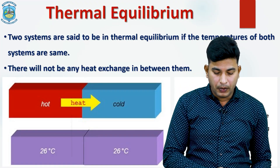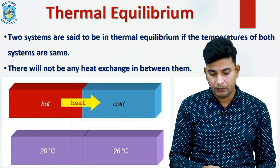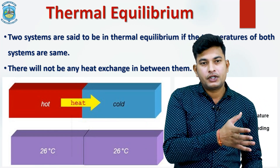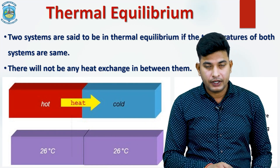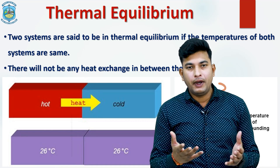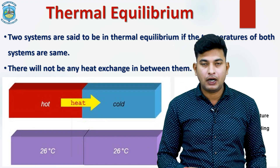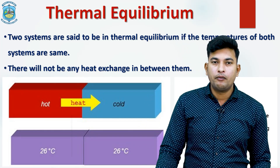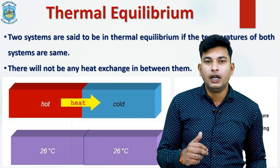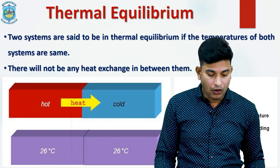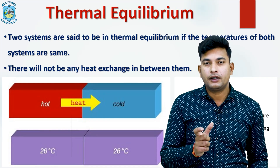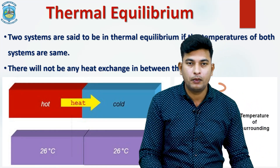Heat is actually transferred from the hot range to the cold range. After some time, the temperature reaches an equal value on both objects — for example, both showing 26 degrees Celsius. At that point, both systems are in thermal equilibrium and there will be no further heat exchange between them.